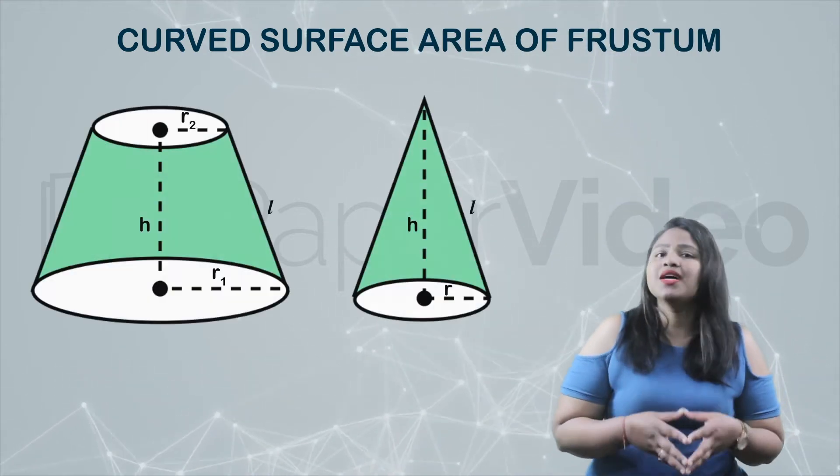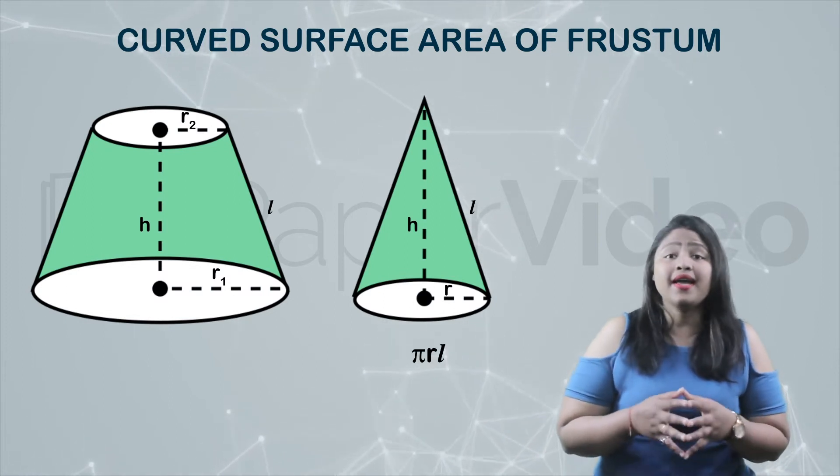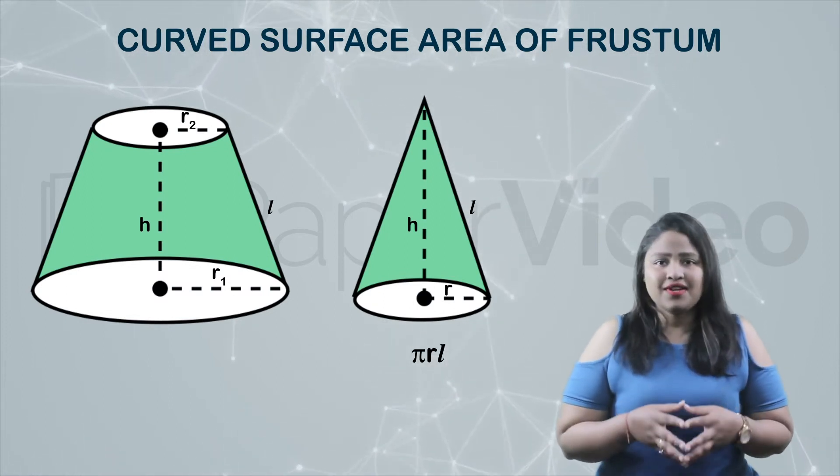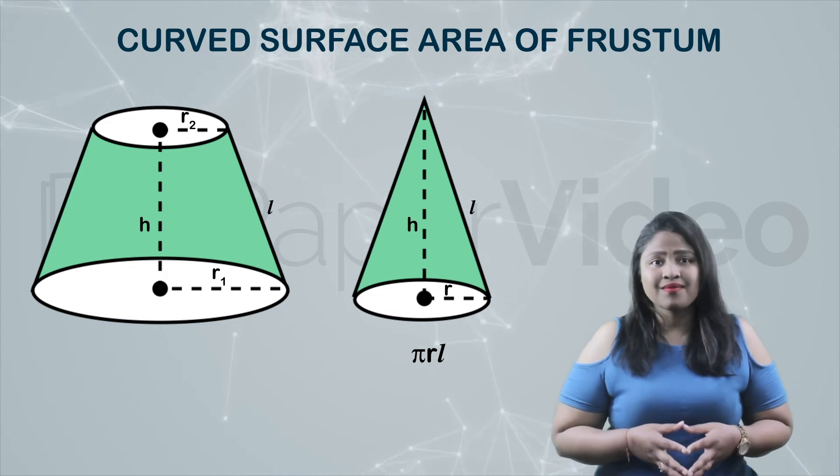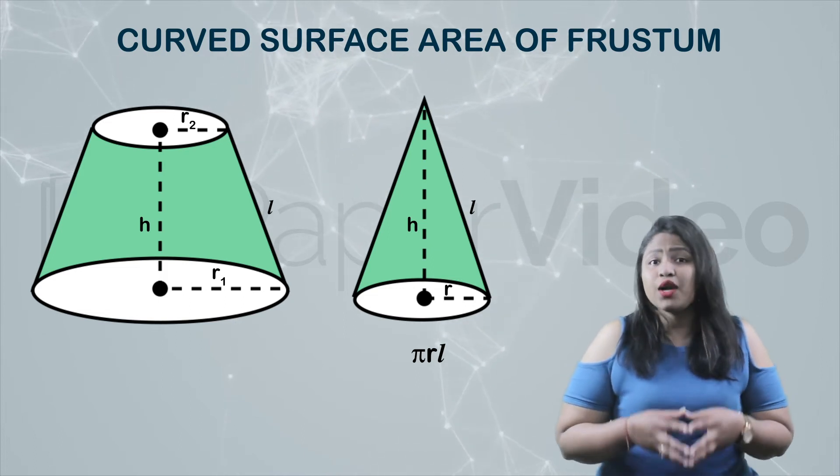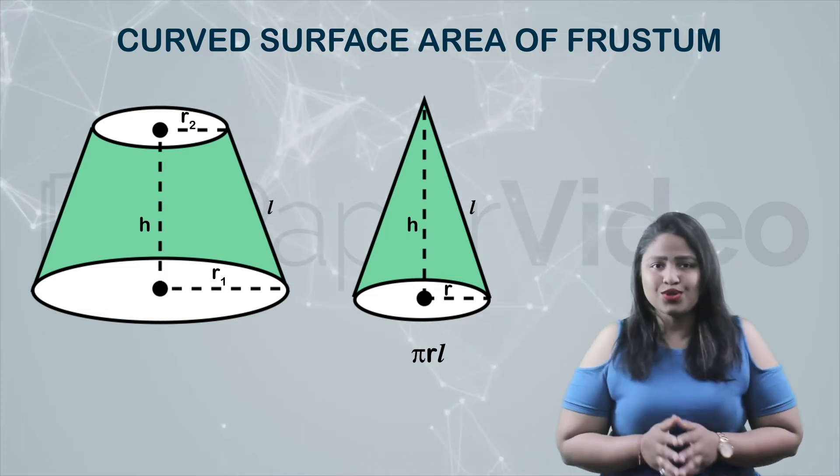If you remember, the curved surface area of a cone is pi r l. Since in a frustum we have two radii, so in place of r, we will write r1 plus r2.